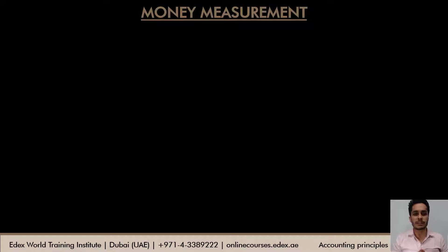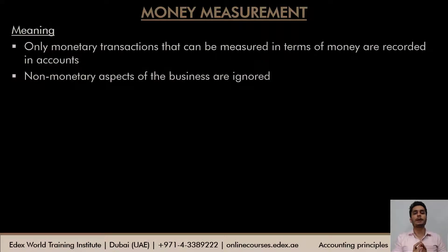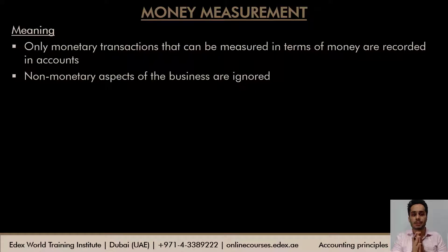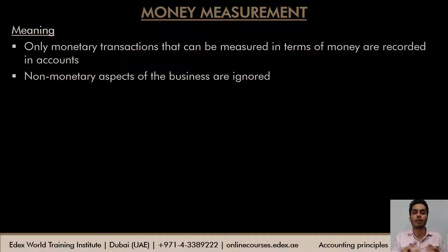First, we have the money measurement principle. This states that only monetary transactions that occur in the business can be recorded in the books of accounts. Non-monetary aspects or transactions of the business have to be ignored when doing accounting. Monetary transactions are those that can be measured in terms of money, whereas non-monetary transactions cannot be stated in terms of money, though they may be very important for the business.